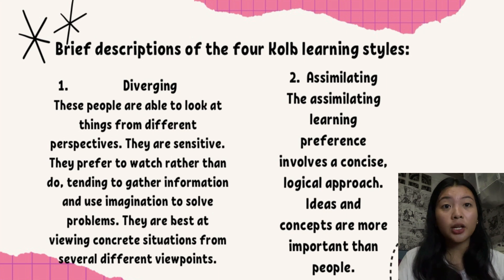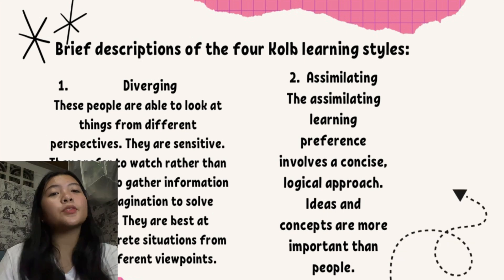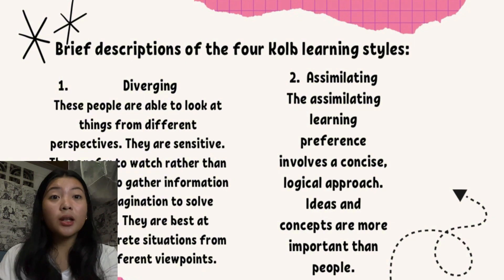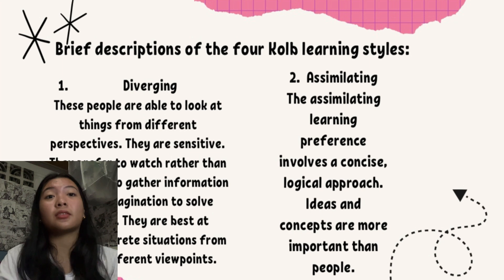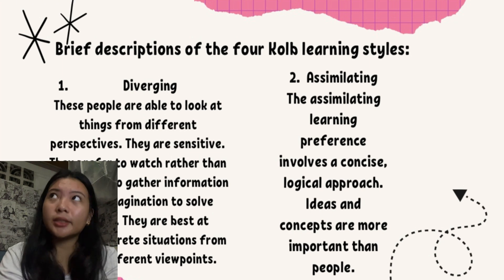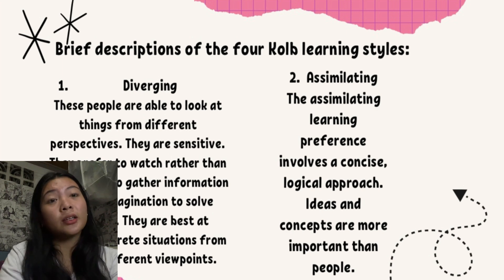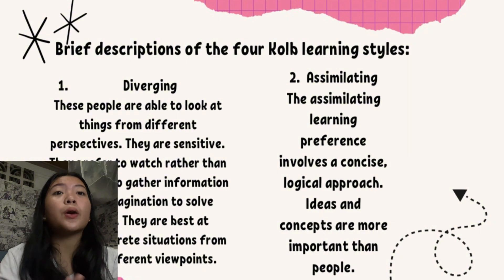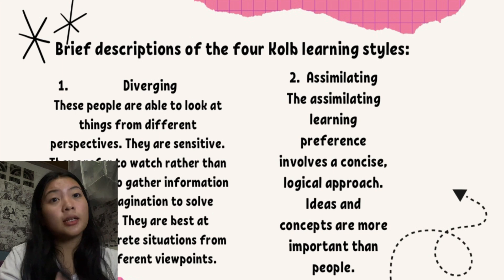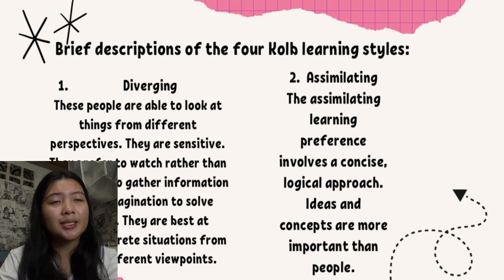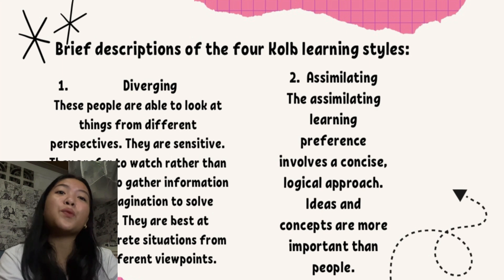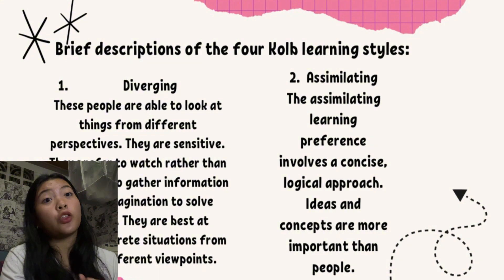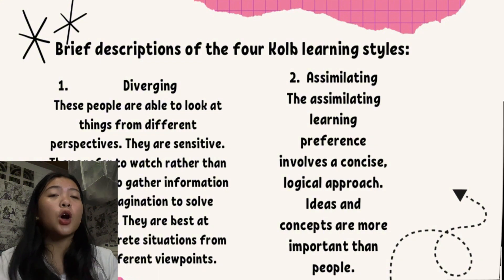People with a diverging learning style have broad cultural interests and like to gather information. The next one is assimilating. The assimilating learning preference involves a concise, logical approach. Ideas and concepts are more important than people. These individuals require clear explanations rather than practical opportunities. They excel at understanding wide-ranging information and organizing it in a clear, logical format, and are more attracted to logical, sound theories than approaches based on practical value.